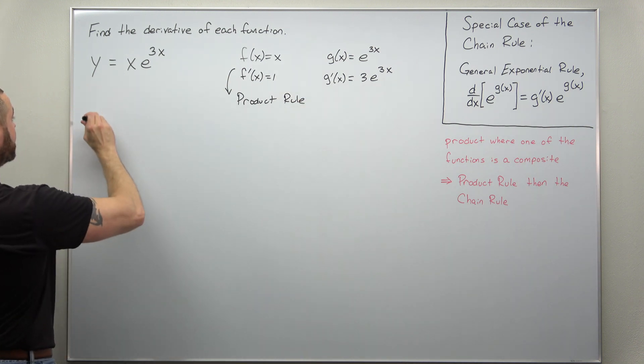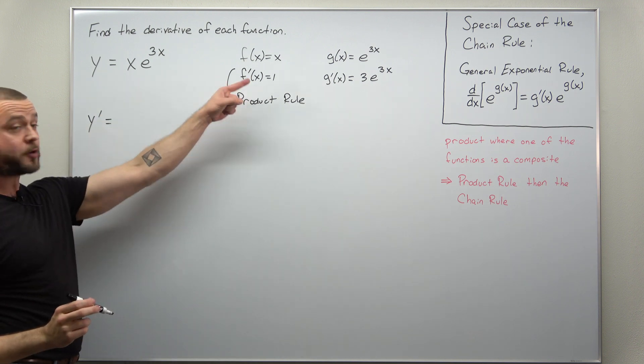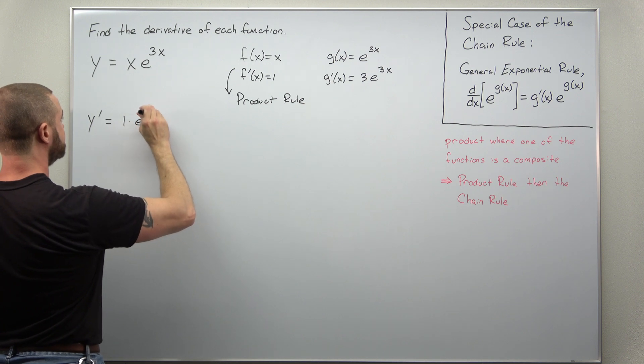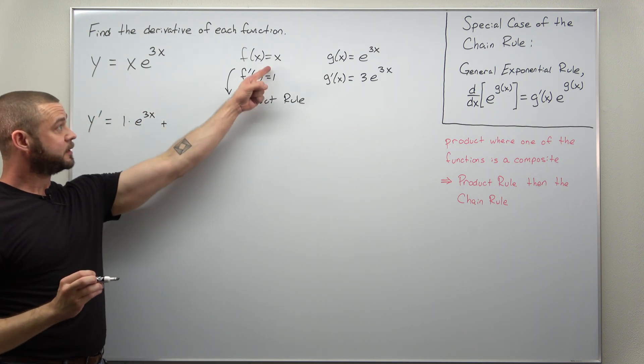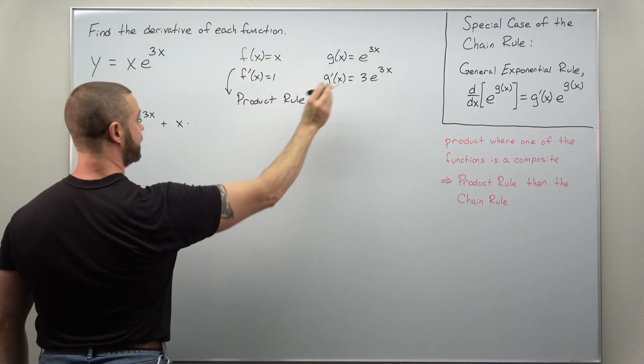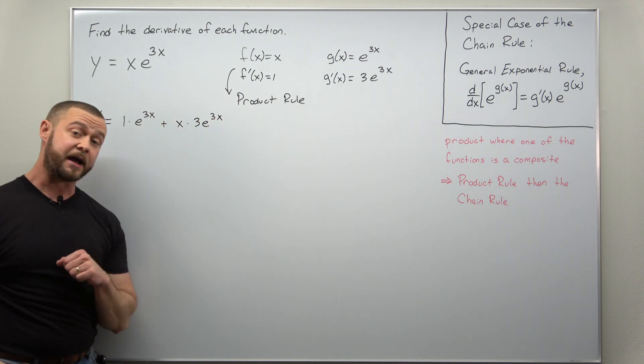Let's go through that. That should be pretty straightforward. The product rule gives us f' times g, so 1 times e^(3x). And then we add to that f times g', so x times 3e^(3x).